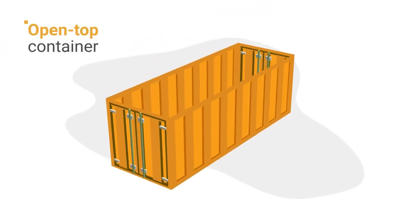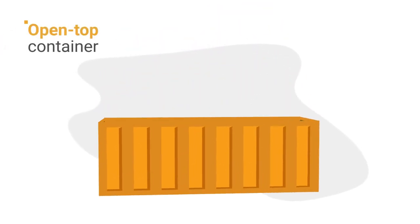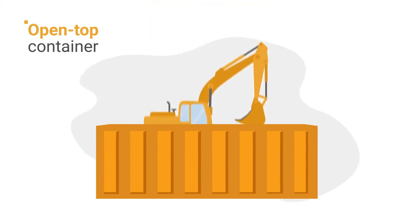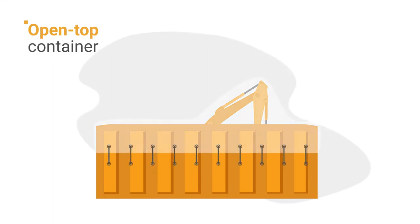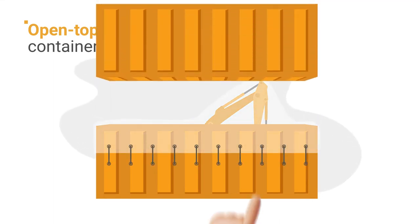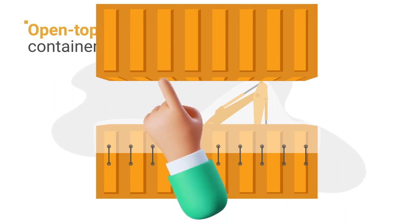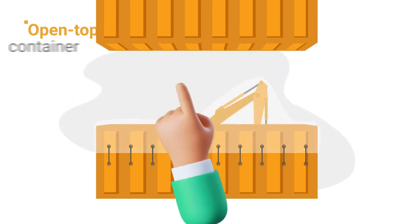4. Open Top Container. Open top containers have no roof, making them ideal for irregularly sized cargo, like heavy machinery. Lashing rings help keep cargo in place, and the cargo can then be covered by a tarpaulin top. But if the cargo goes above roof level, the container can't be stacked, and will be more expensive.